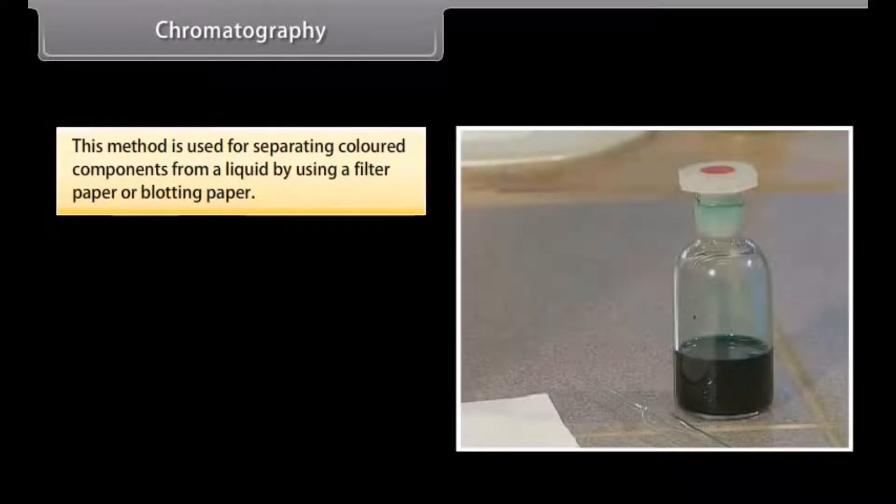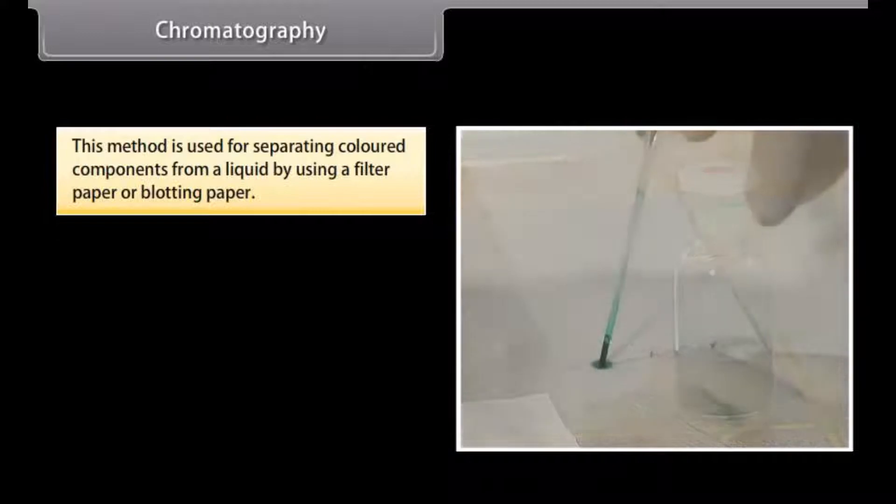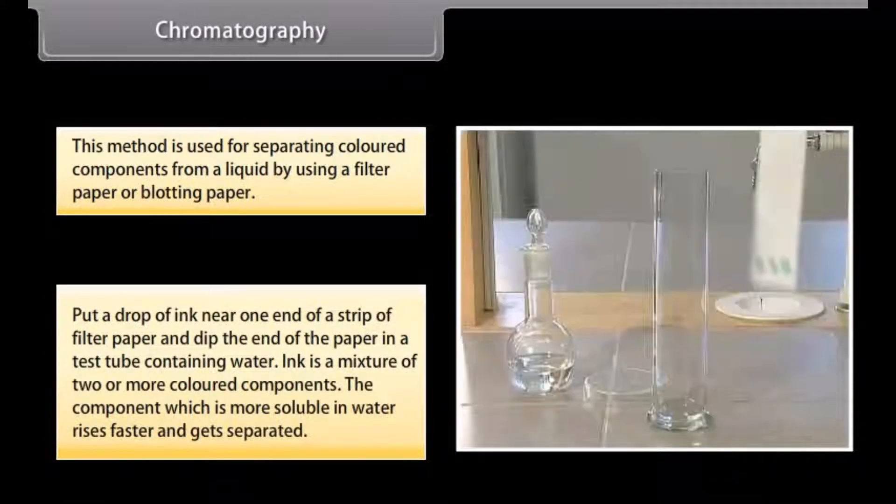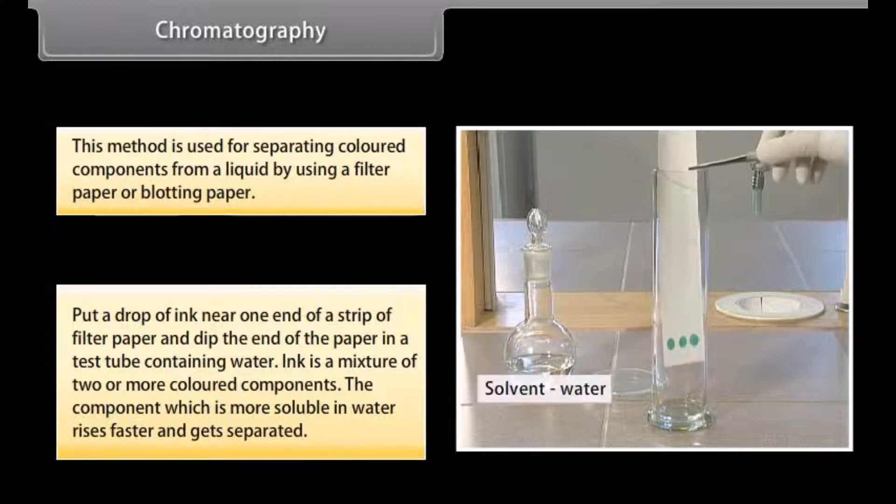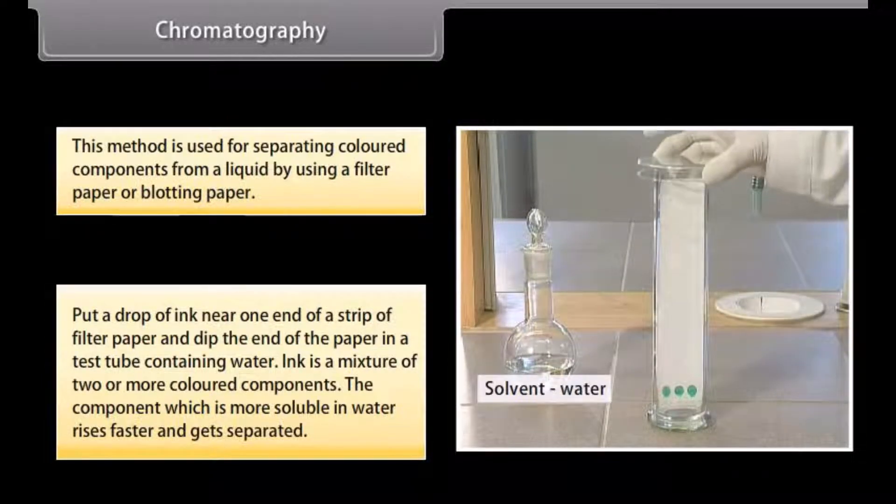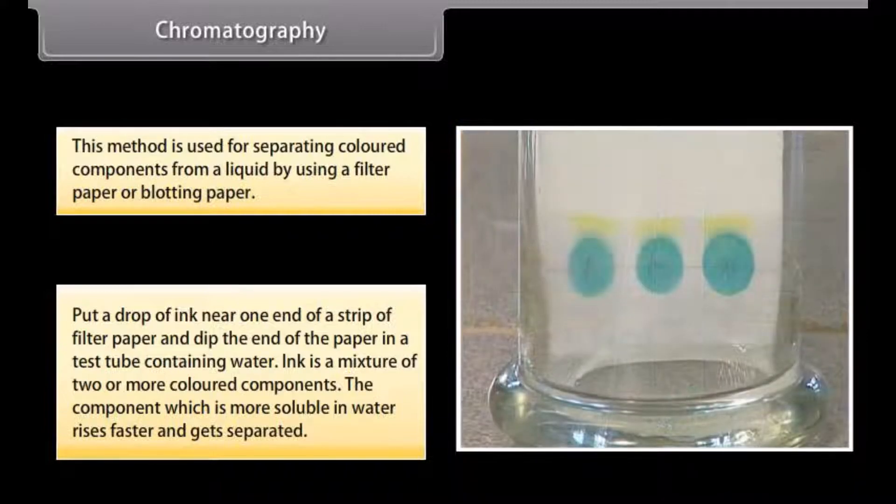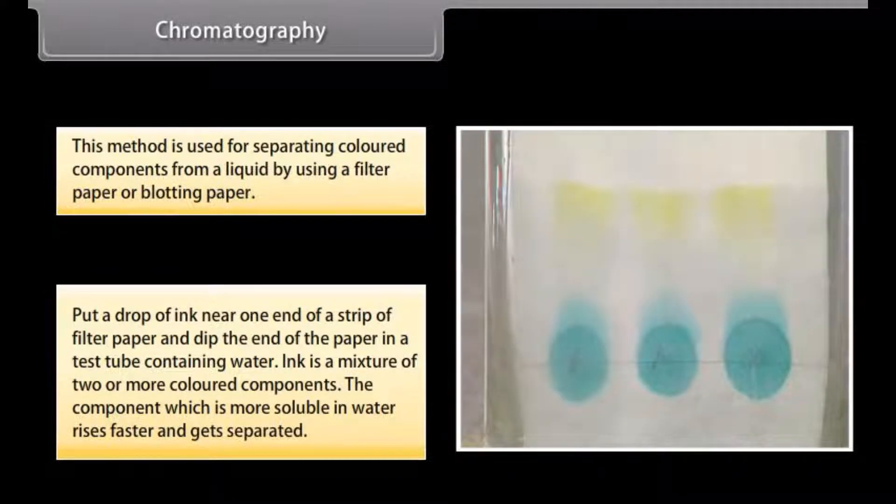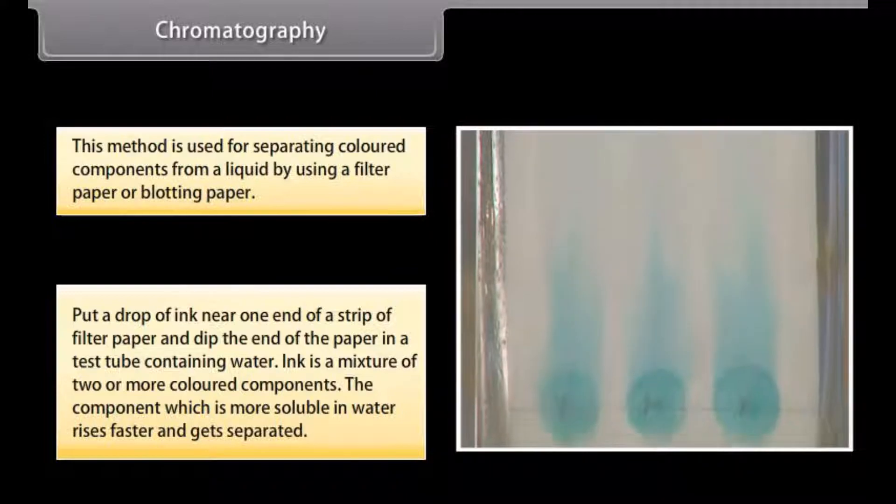Chromatography. This method is used for separating colored components from a liquid by using a filter paper or blotting paper. Put a drop of ink near one end of a strip of filter paper and dip the end of the paper in a test tube containing water. Ink is a mixture of two or more colored components. The component which is more soluble in water rises faster and gets separated.